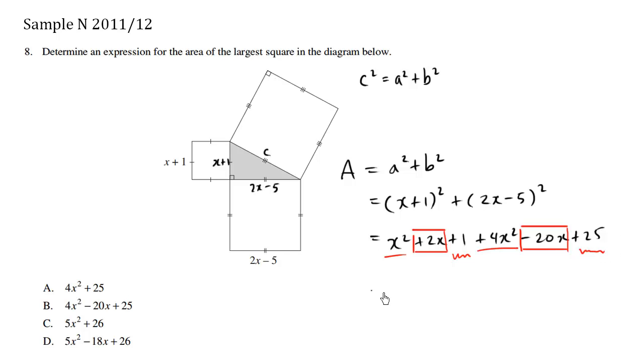So we can simplify. x squared plus 4x squared is 5x squared. Positive 2x, negative 20x is negative 18x. Positive 1, positive 25 is positive 26. So what we have is choice D as our answer.